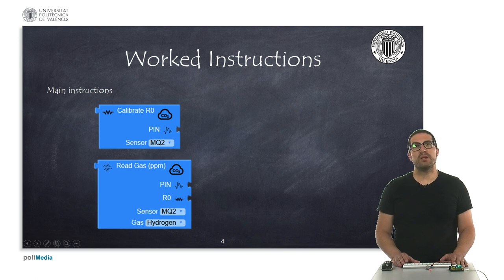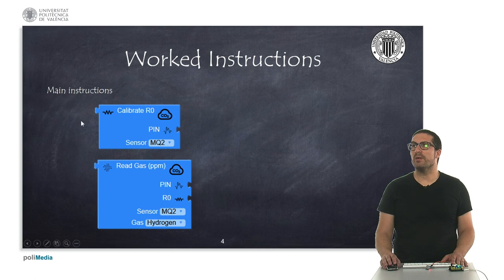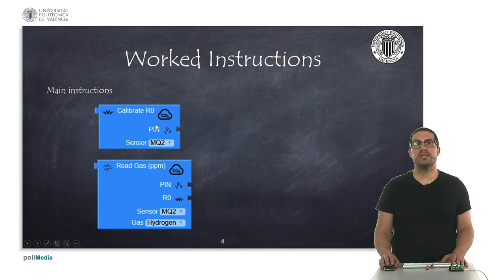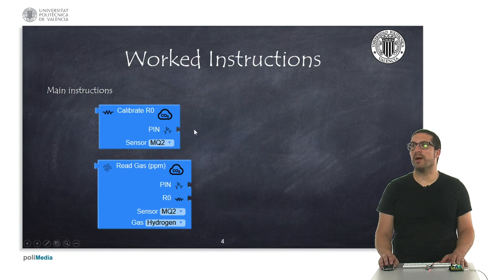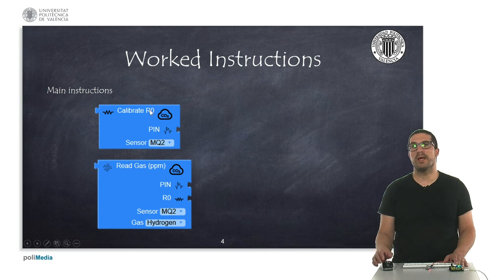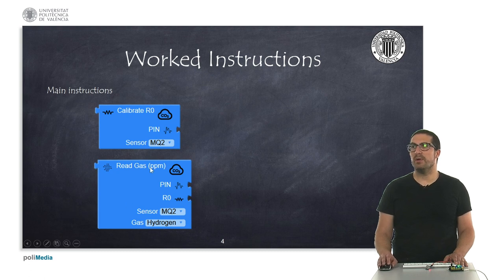These are the work instructions. First instruction here is used to calibrate the internal resistor to get a measurement of the internal resistor R0 and this instruction will allow us to, once we provide here with the analog pin where the analog sensor is connected, it will provide us the value for this resistor that we can print on the console and we just simply can annotate and use it afterwards for this instruction which will provide calibrated measurements in particles per million of a specific gas that we can select. We can select the type of sensor and we can select the type of gas here. Depending on the type of sensor, the type of gases detected will vary. And then in the end here, we will obviously have the concentration for this particular gas.